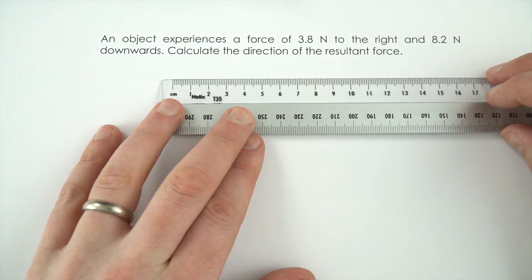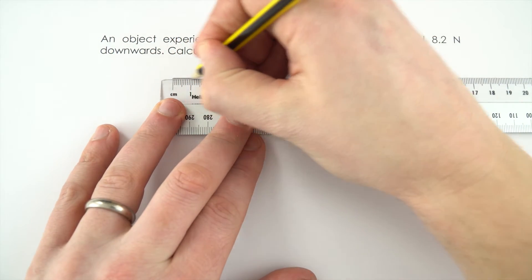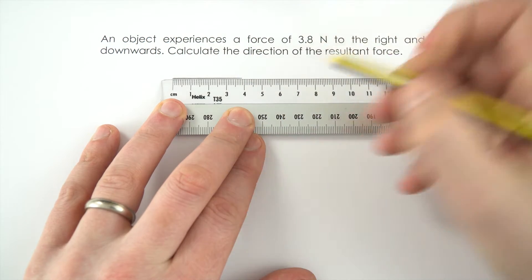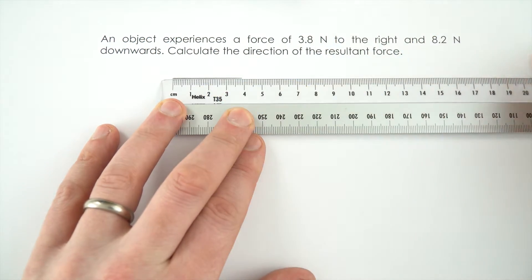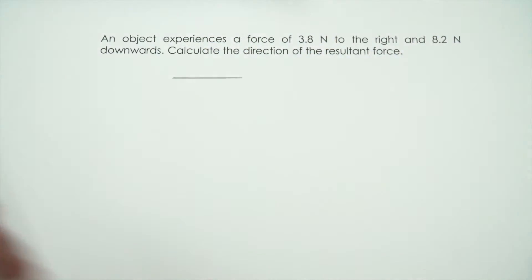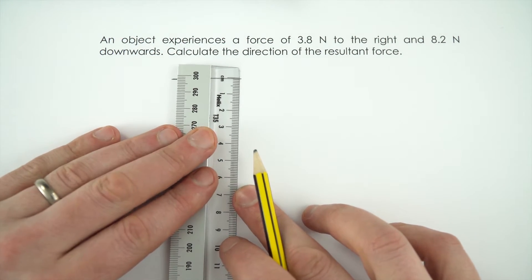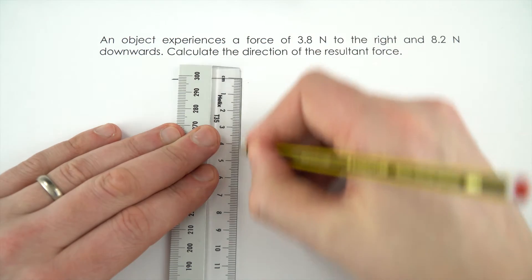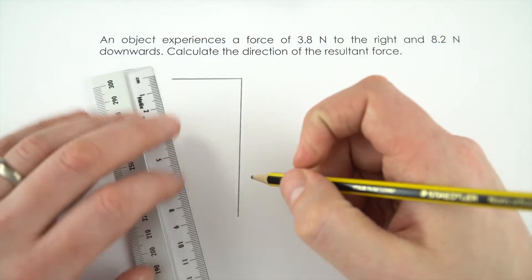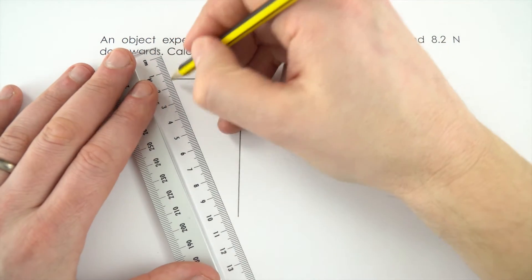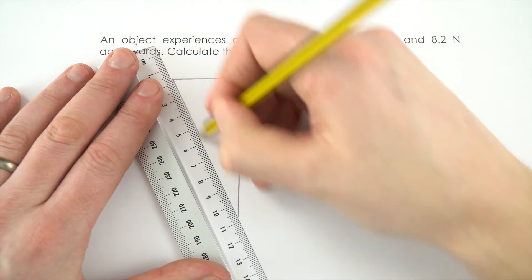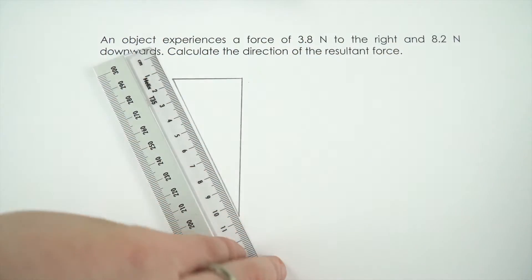The first thing I'm going to do is a very simple quick diagram so I can actually visualize what's going on. I've done 3.8 centimeters for my 3.8 newtons, and I'm going to go down by 8.2 centimeters. This doesn't have to be precise, but if you do a scale-ish drawing it means you can visualize what the final answer is going to be.